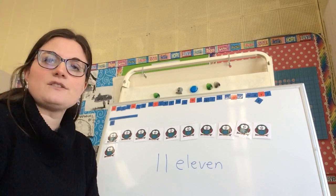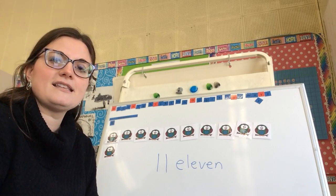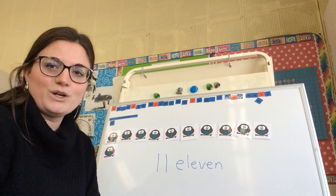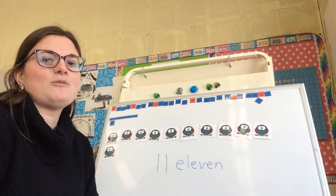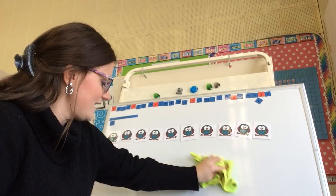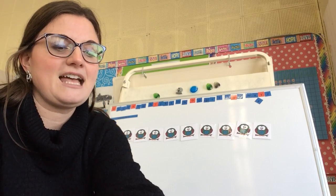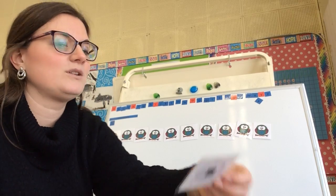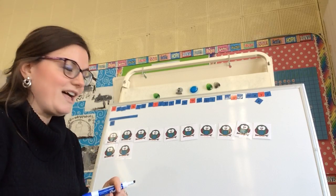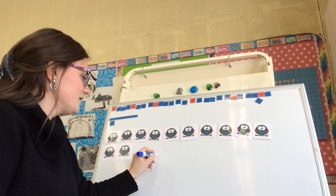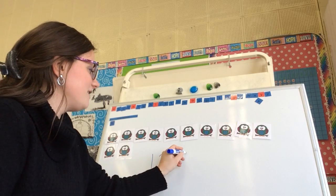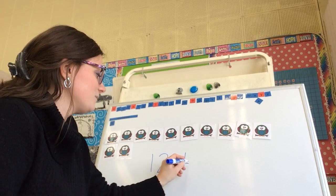Now, if I go too fast for you, all you have to do is hit pause so you can copy down the word, and then we'll move to the next one. So that's eleven. And if I add another owl, what number do I have? Twelve. Can you say twelve? Twelve. And this is what twelve looks like, and this is the number word.